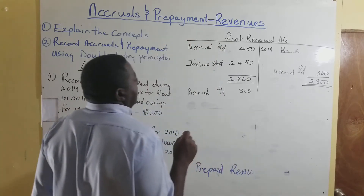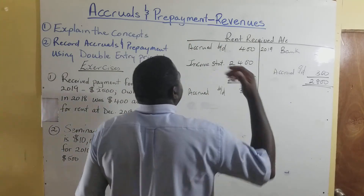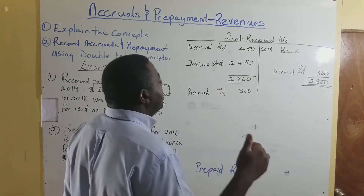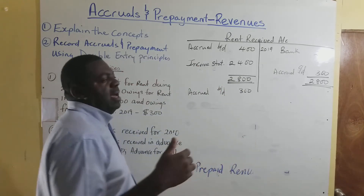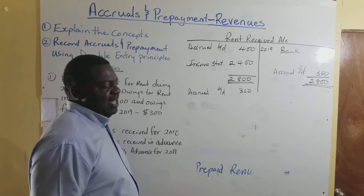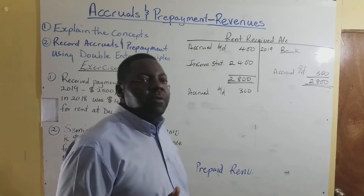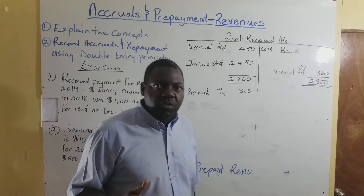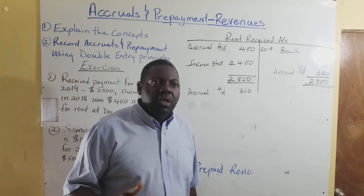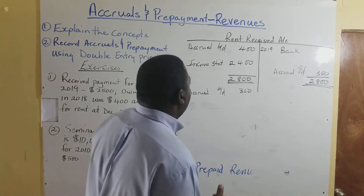That is the workthrough in double entry for rent received — accrued revenue. And remember: revenue accrued, or accruals of revenue, is a current asset.